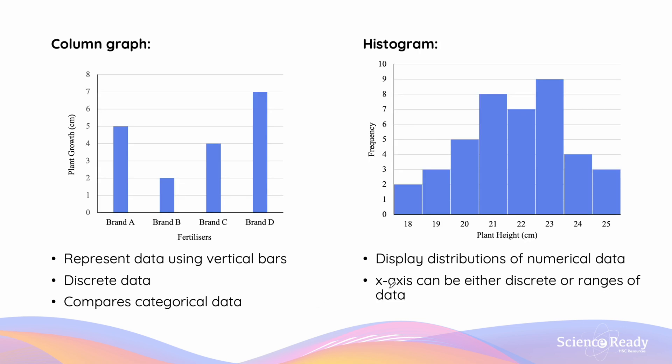Here we can review a summary of our four types of graphs. Column graphs are going to represent discrete data, and are utilized for comparing categorical data. Histograms, which look similar to column graphs, display the distributions of numerical data with the x-axis bins, either being discrete, or ranges of data.